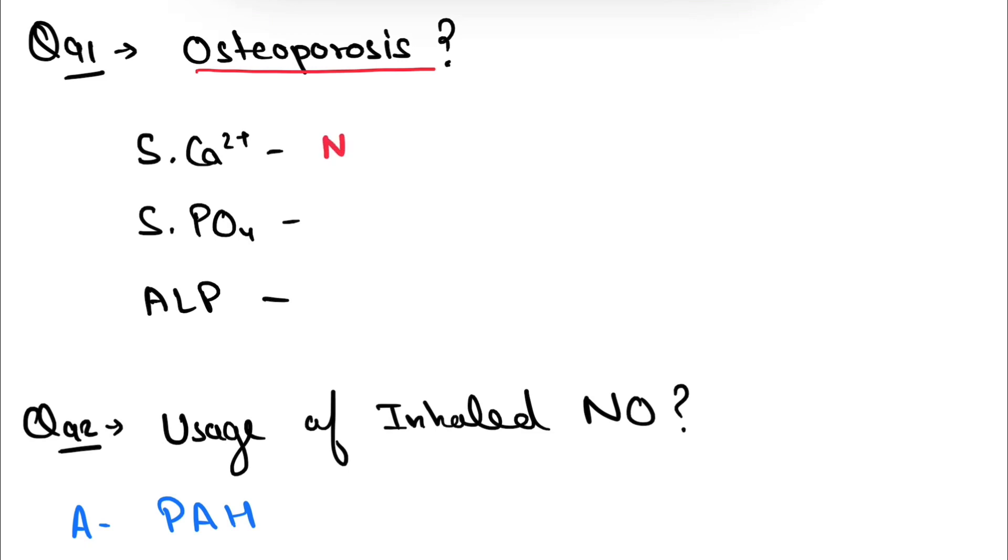and ALP levels. Serum calcium level is normal, phosphate levels are also normal, ALP levels are increased in osteoporosis.